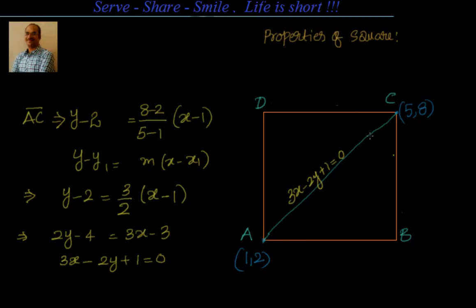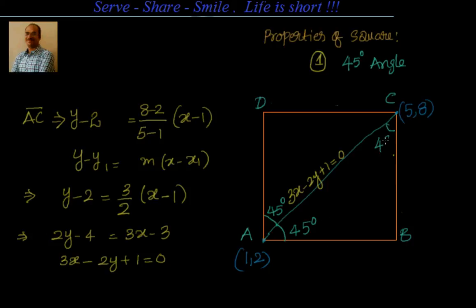Now we have the equation of the diagonal. The first property we'll use: the diagonal makes a 45-degree angle with the side, because the square is divided into two isosceles right-angle triangles. So the angle between the diagonal and any side is 45 degrees. Since we know the equation of the diagonal, let the slope of AB be M. Once we find M, the equation of CD will be parallel to AB but passing through (5,8).